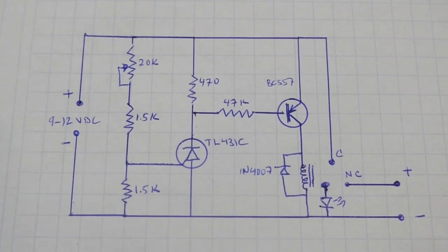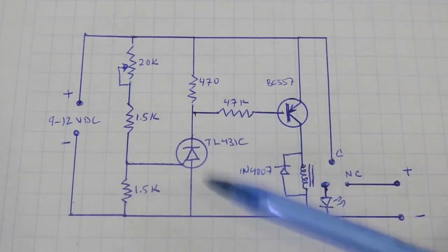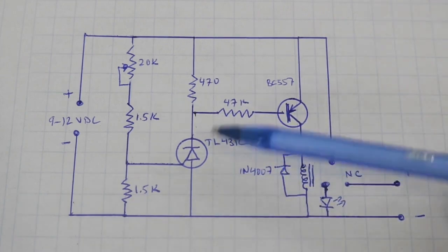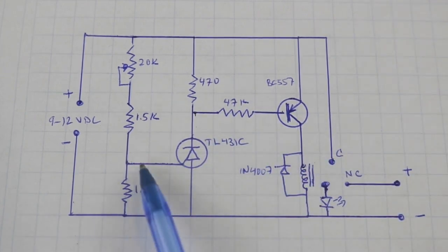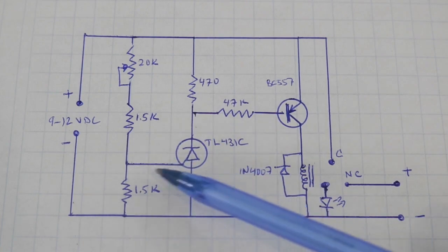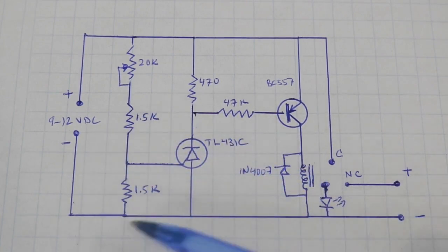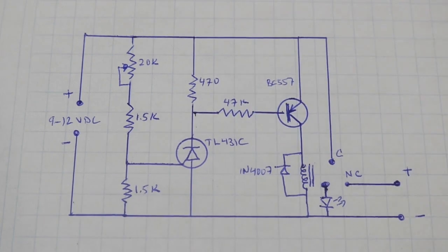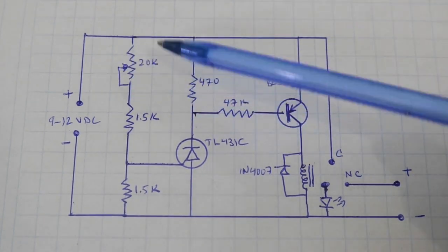I have a video where I explain in detail how it works. The link is in the description, but for the purpose of this video we only need to know that this component does not conduct—it is open unless we have a certain voltage here. When this voltage is reached, then we have conduction on the component. So let's see. The reference voltage is provided by this voltage divider, by these two resistors, and can be adjusted using this potentiometer.